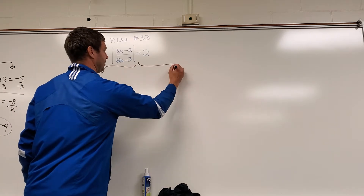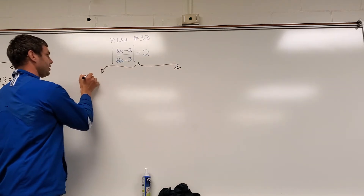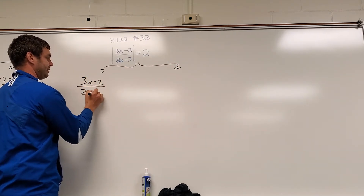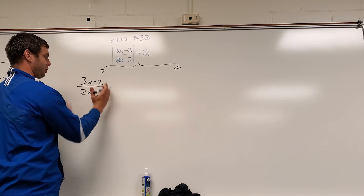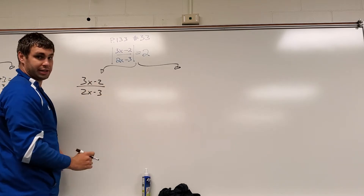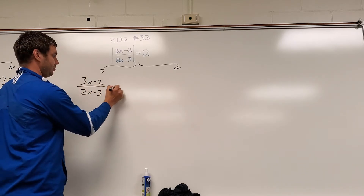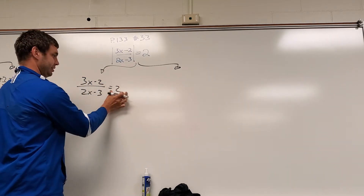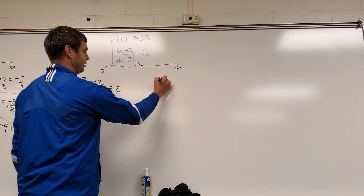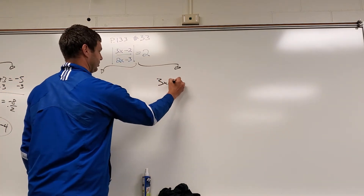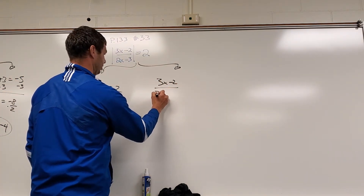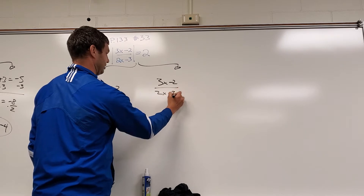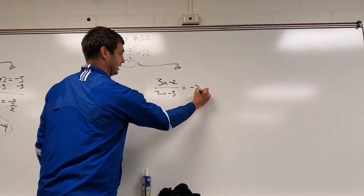The first case is going to be (3x minus 2) over (2x minus 3), without the absolute value signs, equals positive 2. And the other case is going to be the same thing but equal to negative 2: (3x minus 2) over (2x minus 3) equals negative 2.